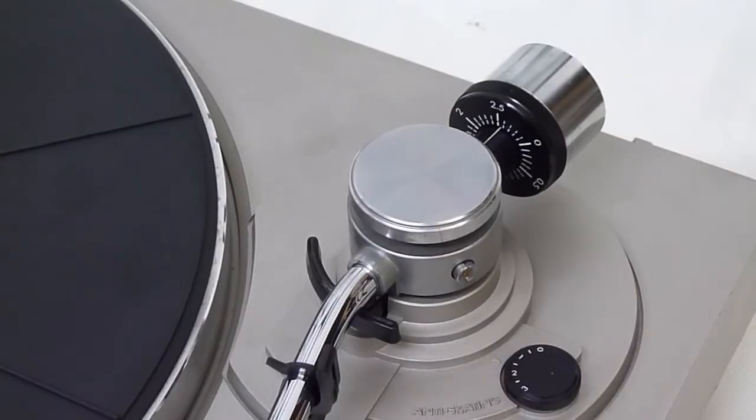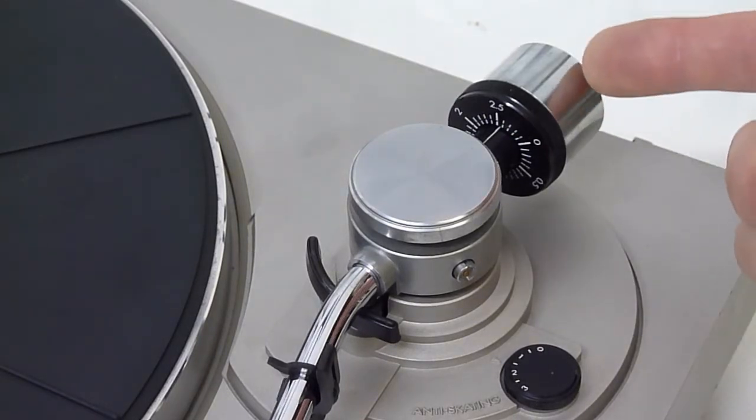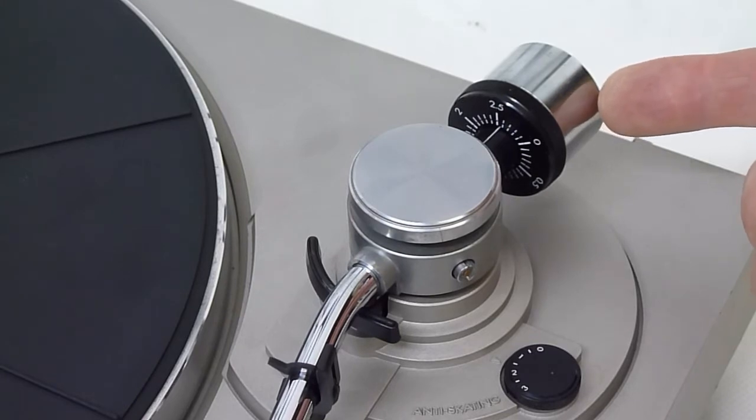It's important to have your tonearm set up with the correct tracking weight for the cartridge so that the stylus tracks in the groove of the record correctly. This is achieved and adjusted using this counterweight at the back end of the arm.